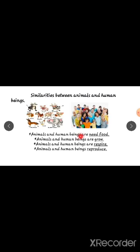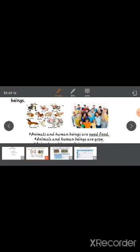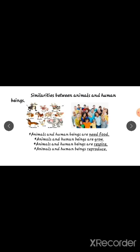Animals and human beings both need food — animals need food and human beings also need food. Both animals and human beings grow. Animals and human beings also respire, which means breathing. Animals and human beings reproduce, meaning they give birth to young ones. These are the similarities between animals and human beings.